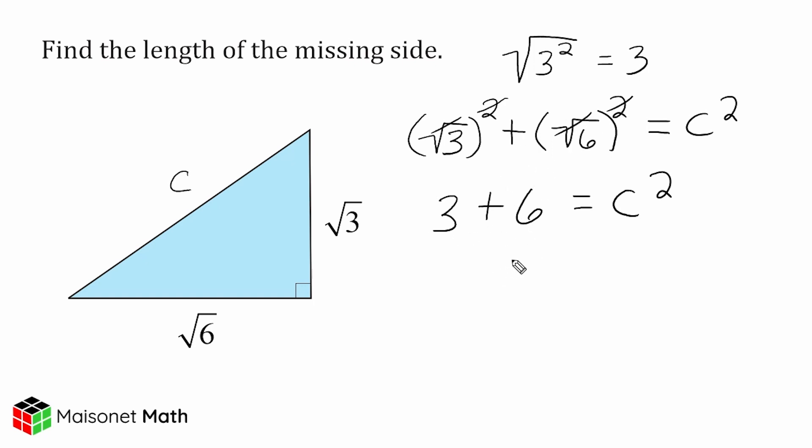So now we just add 3 and 6, and that is 9, and that is equal to C squared. And to figure out what C is, we just take the square root of 9, and that is going to leave us with C being equal to 3 units. So our missing side of this triangle is just 3.